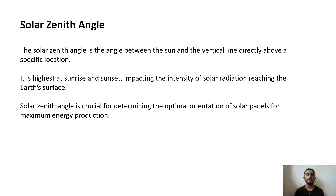The solar zenith angle is the angle between the sun and the vertical line directly above a specific location. It is highest at sunrise and sunset, impacting the intensity of solar radiation reaching Earth's surface. The solar zenith angle is crucial for determining the optimal orientation of solar panels for maximum energy production.